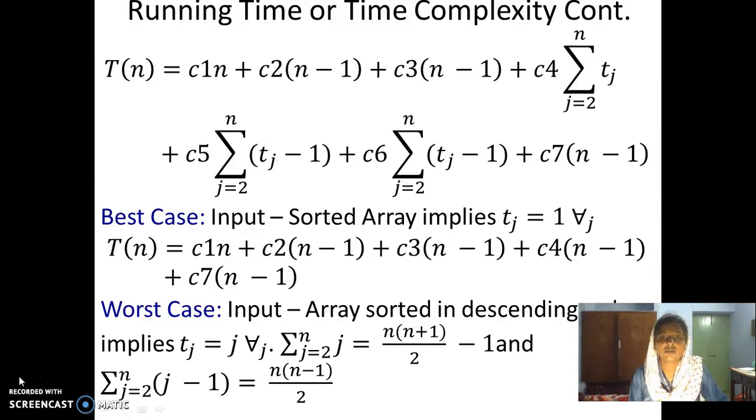We just subtract 1 from n into n plus 1 divided by 2. The summation which runs from j equal to 2 to n, j minus 1, every time it is 1 less than the previous sum. This sum is actually like 1 plus 2 plus 3 up to n minus 1, so we have n minus 1 into n divided by 2.